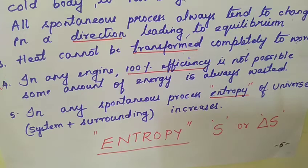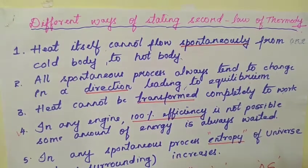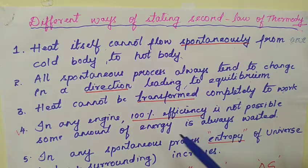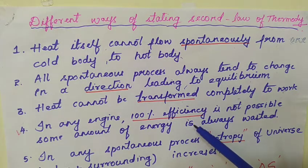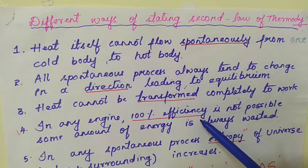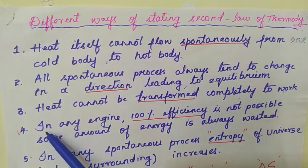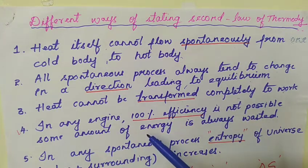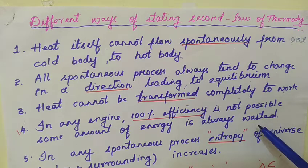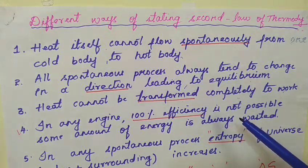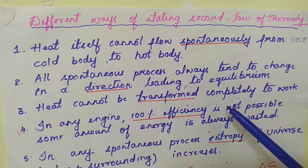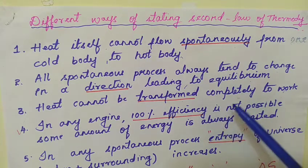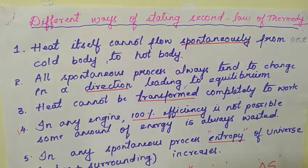The fourth definition of the second law is quite easy and explains its importance very clearly: in any engine, 100% efficiency is not possible and some amount of energy is always wasted, because when one form of energy is converted to another, the conversion cannot happen 100%. The efficiency of a heat engine or any engine is explained using the Carnot cycle in future topics.